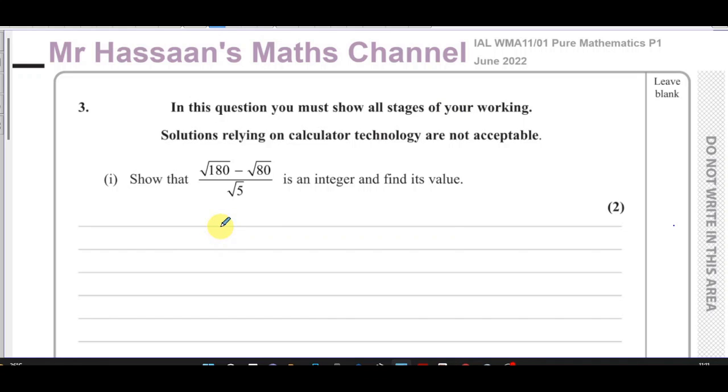This question is about this expression in surd form, which we have to simplify and show that it's an integer and find its value. It very clearly says solutions relying on calculator technology are not acceptable and that you have to show all stages of your working. You can just stick this in your calculator and the answer will come out and you will get zero marks for that. So you have to show how you've done that. Now, there are different methods we could use to solve this problem.